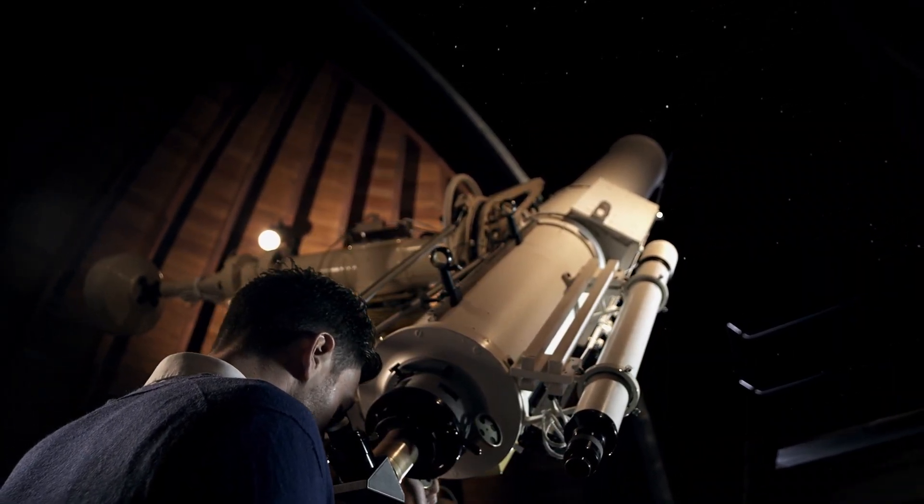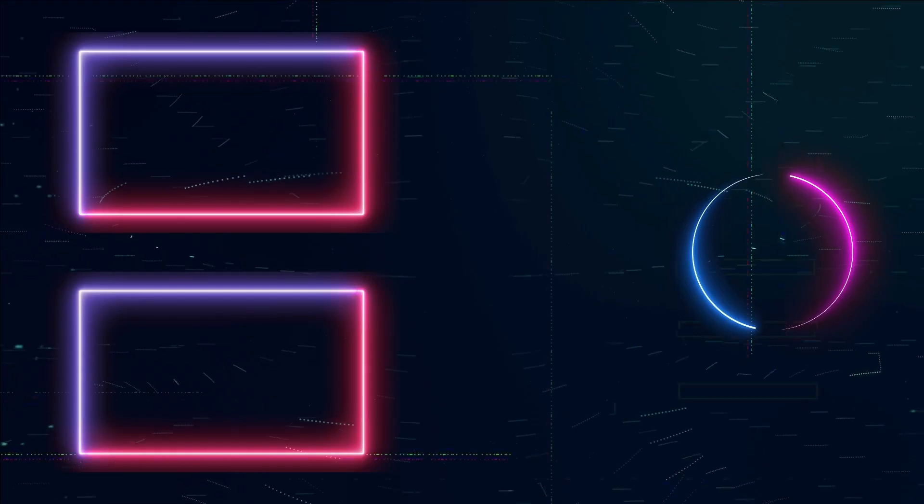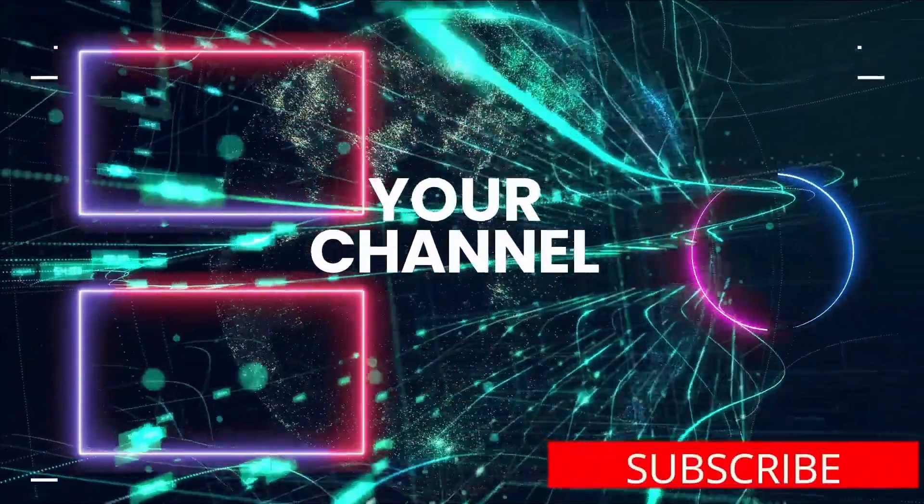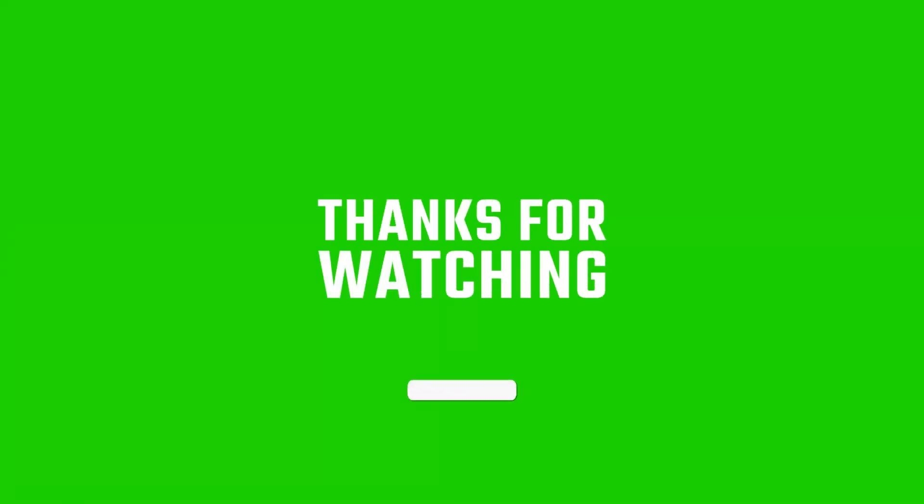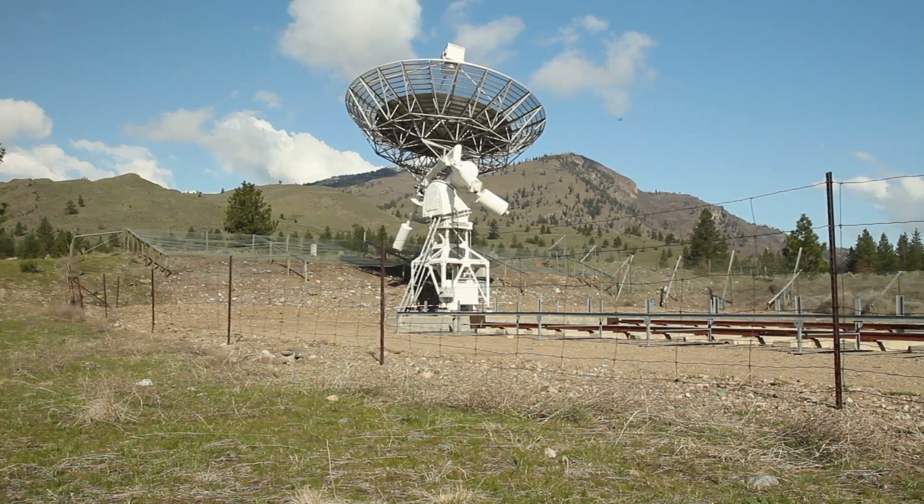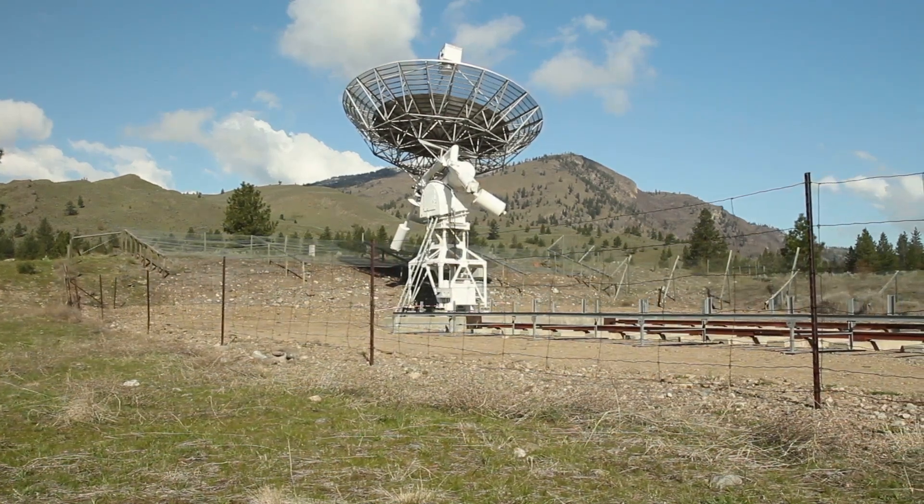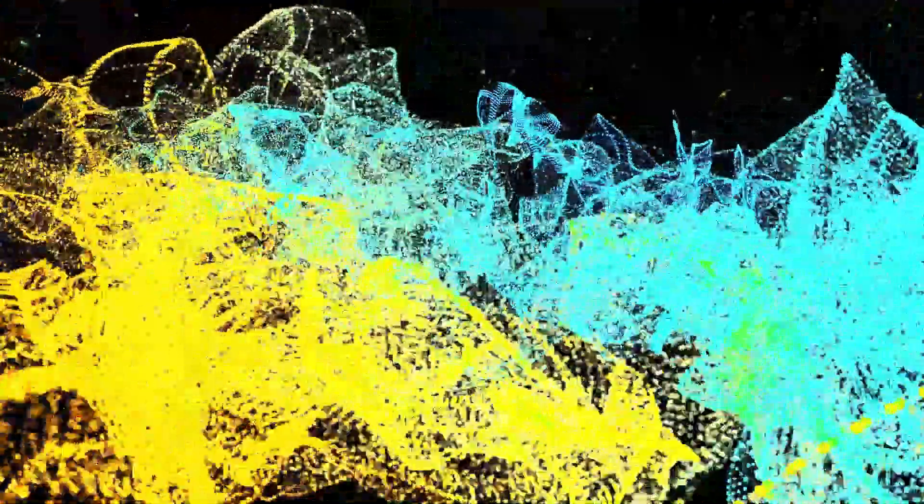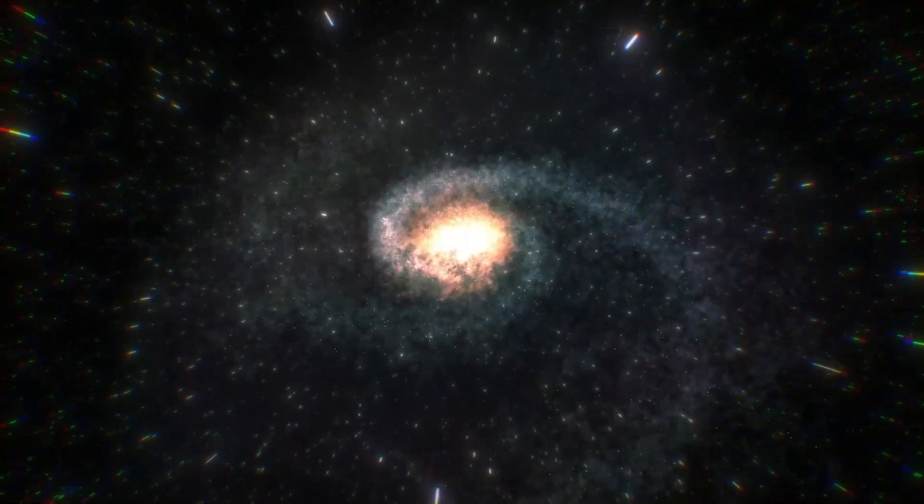The Pisces Cetus supercluster complex, discovered in 1987, is another structure of great magnitude. It contains the local Virgo supercluster, where our own galaxy, the Milky Way, is located. This complex also hosts a large number of groups and clusters of galaxies, extending over 110 million light-years and with an estimated mass of 10¹ solar masses.